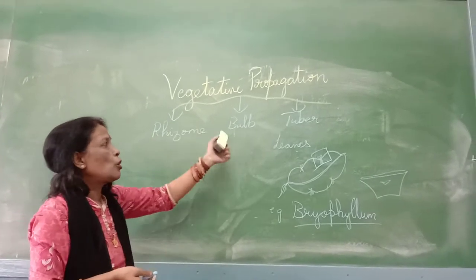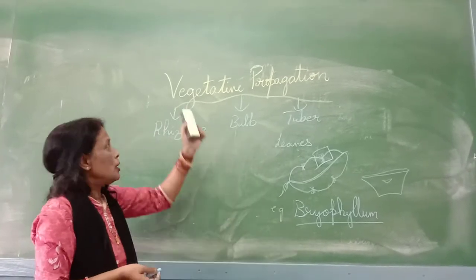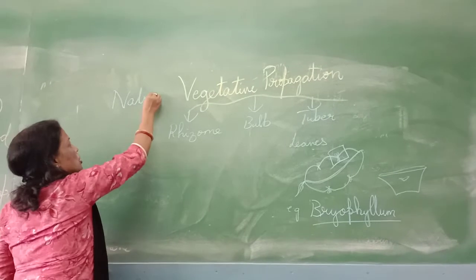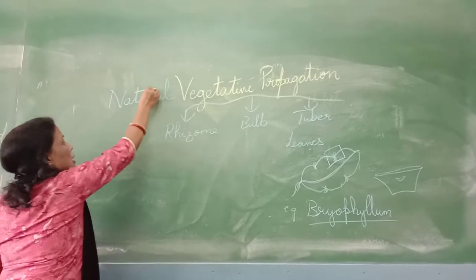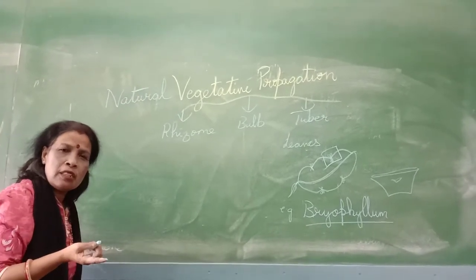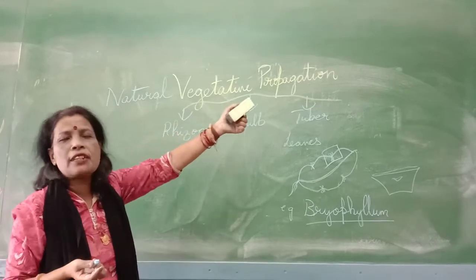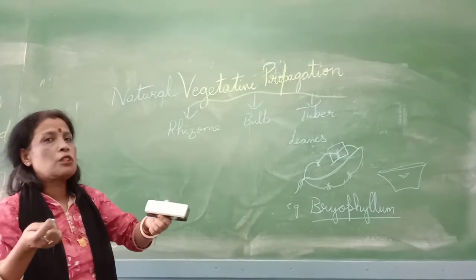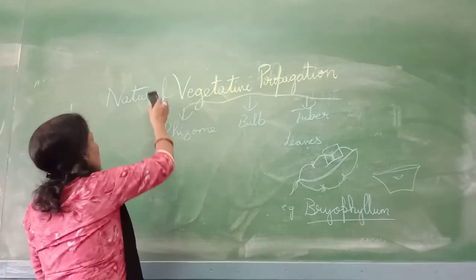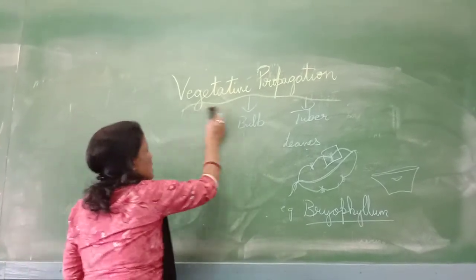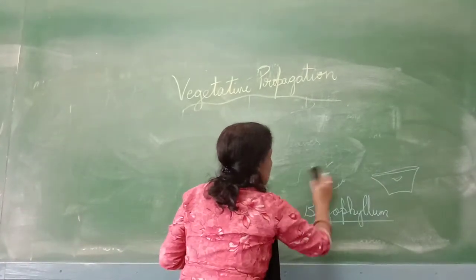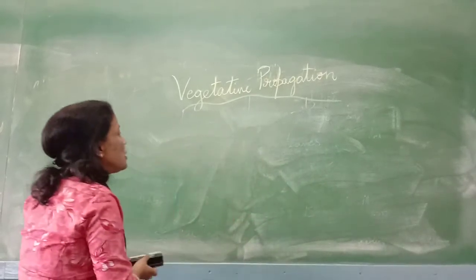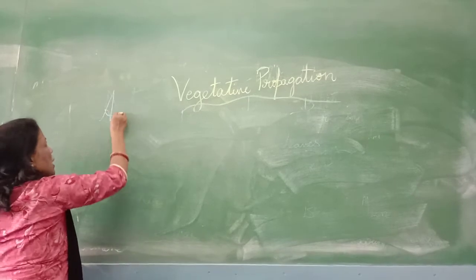All of what we have discussed is natural vegetative propagation. Vegetative propagation can also take place artificially. Now we are going to discuss how artificial vegetative propagation takes place.